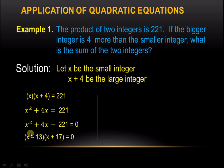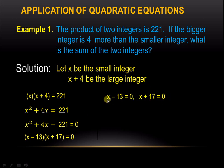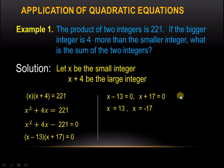We equate each factor to 0, giving us two equations. Solving for x, we get x equals 13 from the first equation and x equals negative 17 from the second equation.